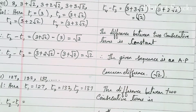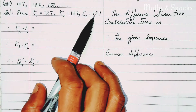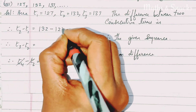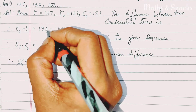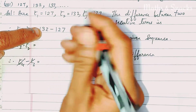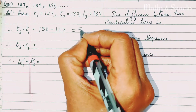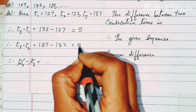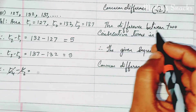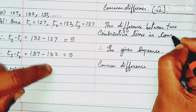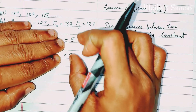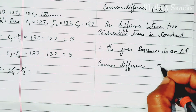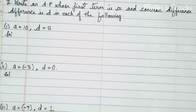The eighth sum: 127, 132, 137. T2 minus T1: 132 minus 127 = 5. T3 minus T2: 137 minus 132 = 5. The difference is constant. Therefore, the given sequence is an AP and common difference d = 5.